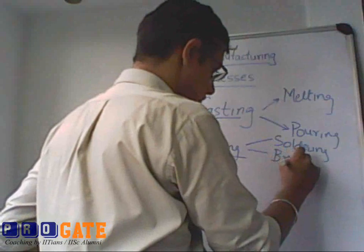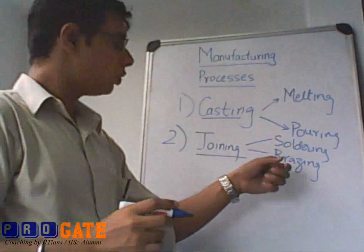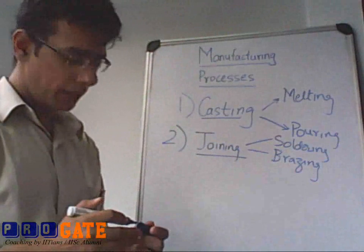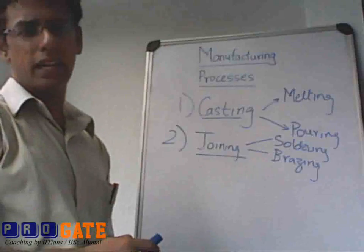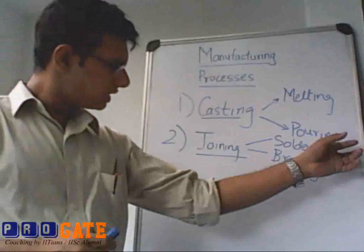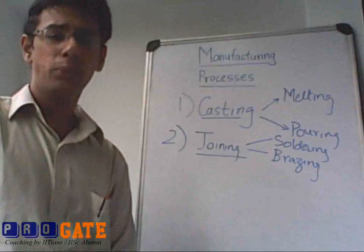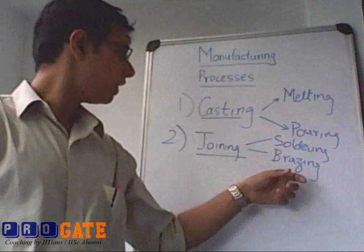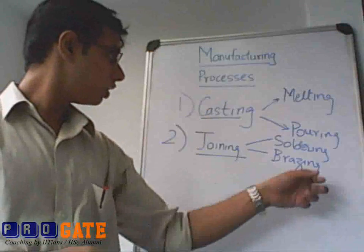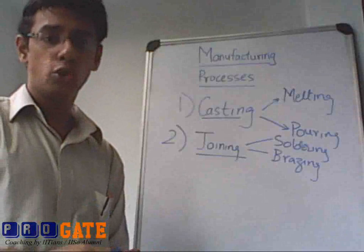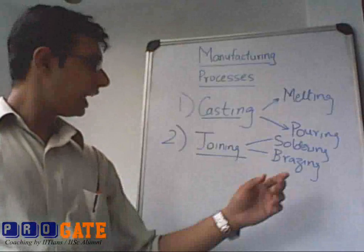After soldering, we shall look at brazing. Brazing is nothing but a high temperature version of soldering. In soldering we typically deal with temperatures in a certain low range, roughly up to 250 to 300 degrees centigrade. Brazing on the other hand will go up to about 800 degrees centigrade. Both of these join two materials, which can be the same type or different types, but they have to be joinable.